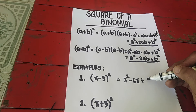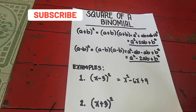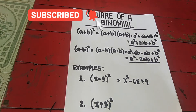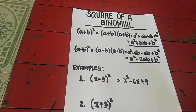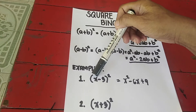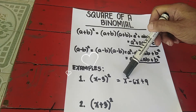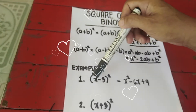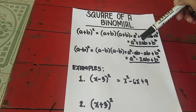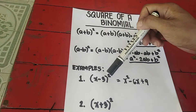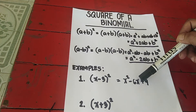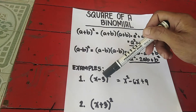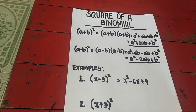So the shortcut for (x − 3) squared: you don't need the long method. Square x to get x squared, multiply x times 3 times 2 to get 6x, the sign is minus, and the third term is always positive — 3 squared is 9. So the answer is x squared minus 6x plus 9.